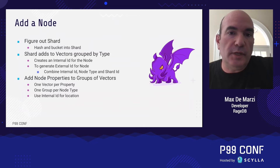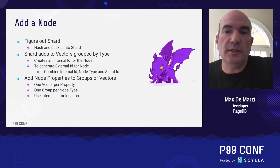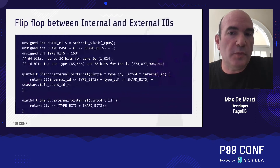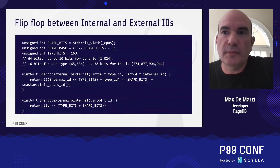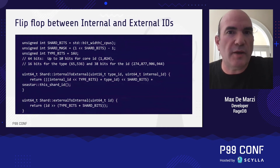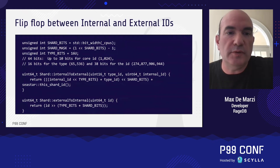You flip-flop between internal and external IDs: anything outside the local shard uses the external ID, anything inside uses the internal ID. We carve up the 64-bit space to make room for the shard, the type, and the internal ID — 10 bits for a core (up to 1,024 cores, giving about 10 years headroom), 16 bits for the type (up to 65,000 types), and 38 bits for the ID space, allowing up to 275 billion nodes and relationships.